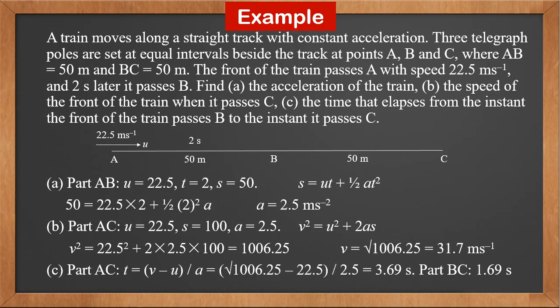For part AC, we can use t equals v minus u over a to find the time. V, which we just found, is the square root of 1006.25. U is 22.5 and a is 2.5. So t is 3.69 seconds. The time for AB is 2 seconds, therefore the time for BC is 1.69 seconds.